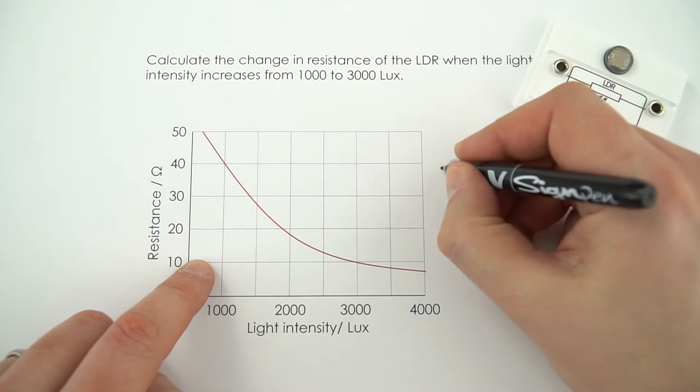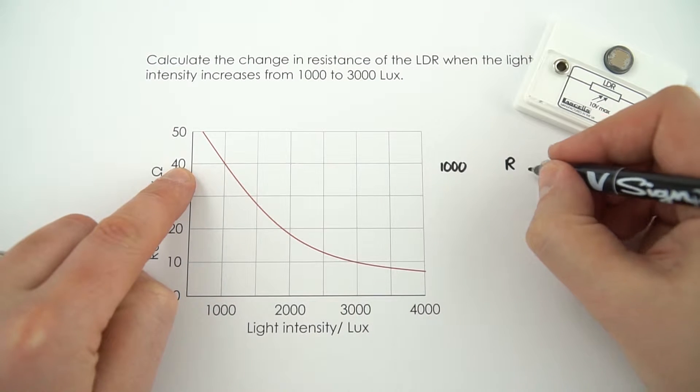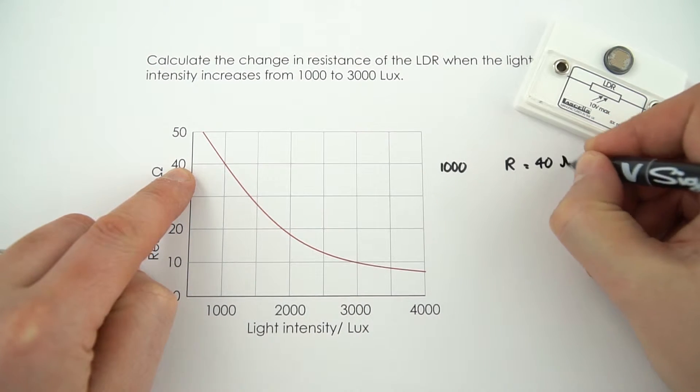So first of all, when the light intensity is equal to 1000, the resistance is equal to this value here, which equals 40 ohms.